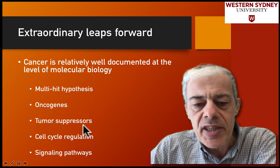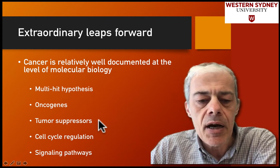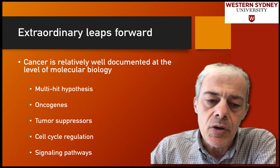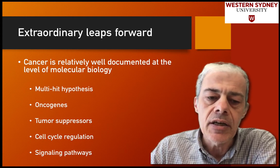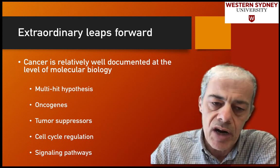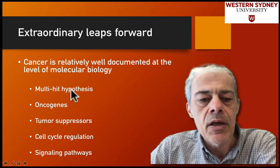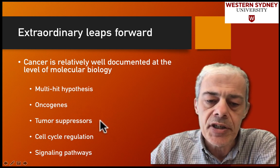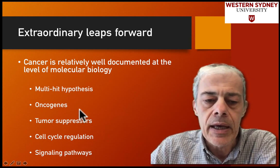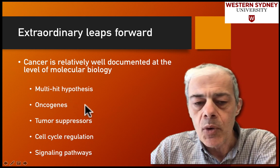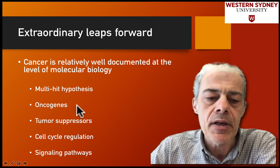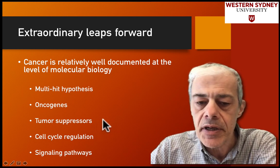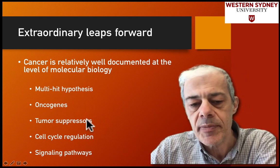We've talked about tumor suppressors — proteins in the cell that slow down growth. When you knock out tumor suppressors, you lose the ability to slow down growth, which is effectively the same as driving growth. The analogy is that oncogenes are like the accelerator in a car, and tumor suppressors are like the brakes. A hyperactive oncogene drives growth; knocking out the brakes means you can't stop growth.